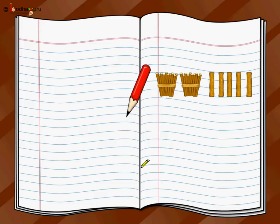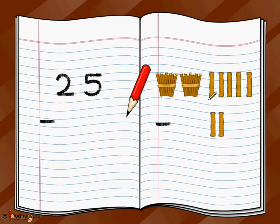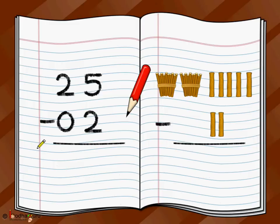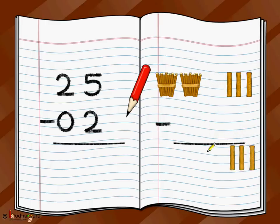Let's take another example. You have two bundles — so it is twenty — plus twenty-one, twenty-two, twenty-three, twenty-four, twenty-five sticks. And of that you want to remove two sticks. How do you write two here? You write two in the ones position, and in the tens position you write zero — which means zero bundles of ten. So you write zero two. Then start from the loose sticks: five minus two — you are left with three sticks. Five minus two is equal to three.